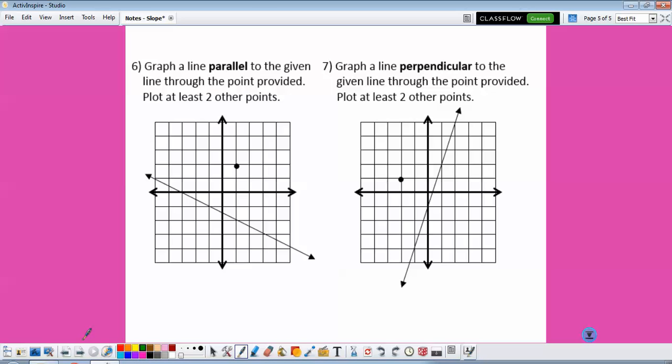For our last two examples, we are going to create a new line given the line that we already have. So graph a line parallel to the given line through the point that we're given. So first we need to find the slope. The slope of this one, if we do rise over run, is 1 over negative 2.